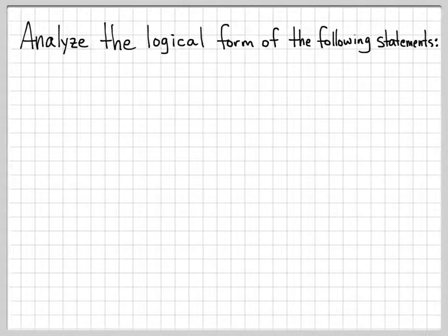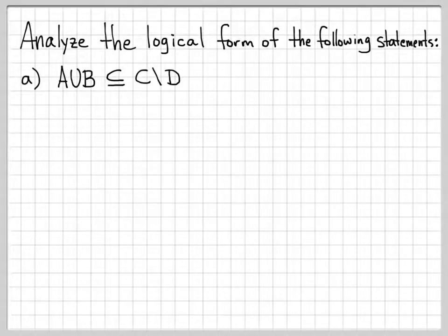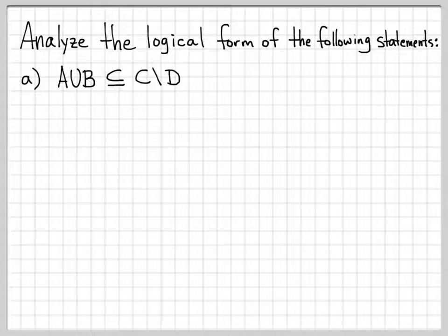We're going to get some more practice working with quantifiers. We're going to analyze the logical form of the statement A union B is a subset of C difference D. By analyzing the logical form, we mean instead of using set notation like union, subset, and difference, we'll write this out using logical symbols like for all, there exists, ands, ors, and things like that. We'll systematically remove and replace those with equivalent logical expressions.